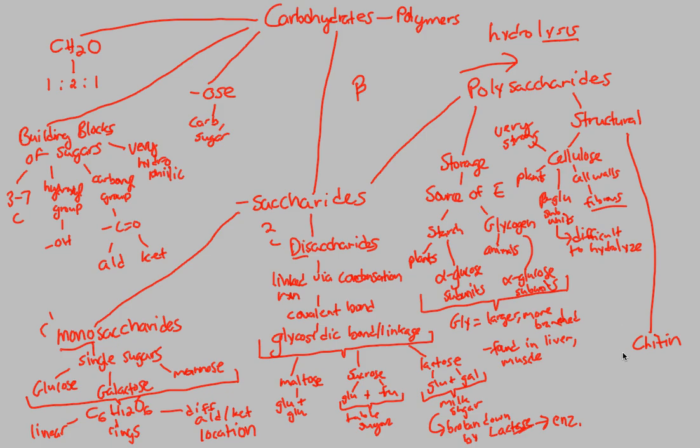Last one for this video, chitin. Chitin is made up of, this is sort of a fancy term, N-acetyl-glucosamine. What's the point of chitin? Chitin is also made with that beta-glucose subunit. So what does that tell you automatically about chitin? You expect it to be pretty strong, and it's also pretty difficult to hydrolyze. But the only difference is that this is not found in plants.